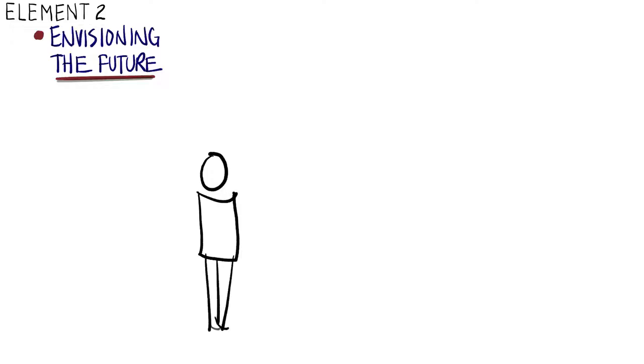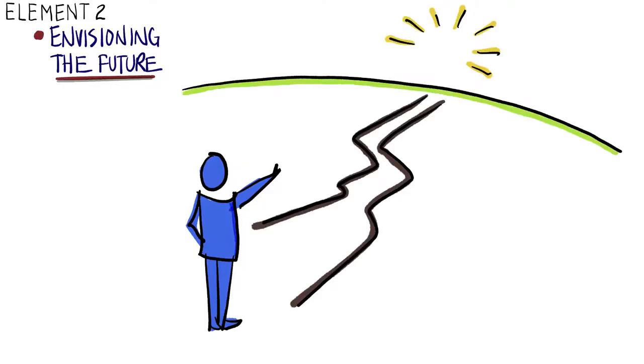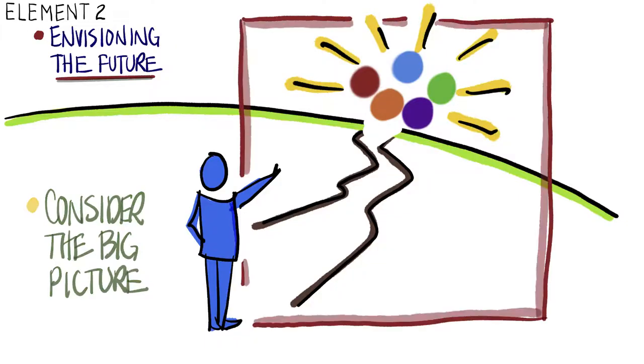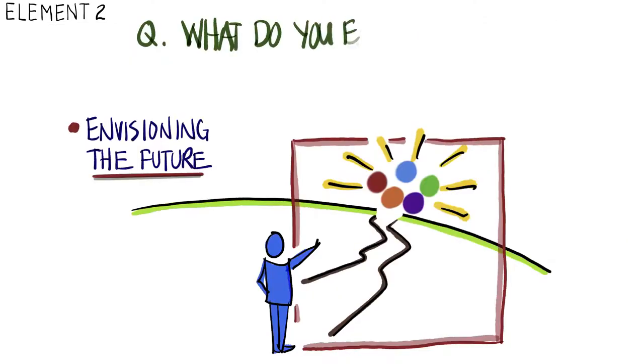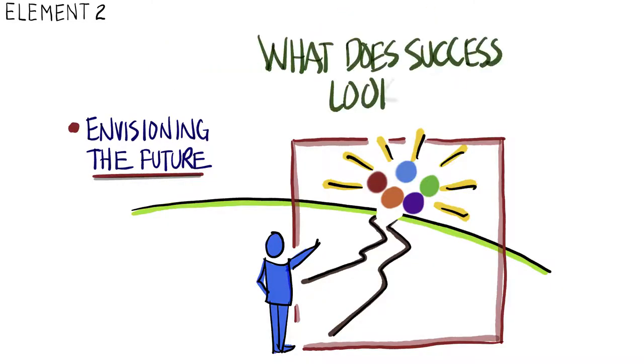The second element is envisioning the future. Picturing your future and what you want it to look like is critical to bring it into reality. Take several moments to thoughtfully consider the big picture. This will make it easier to understand what steps need to be taken to get the result you seek. Here are some questions to consider: What do you envision for your future? Don't limit yourself and think big. What does success look like?